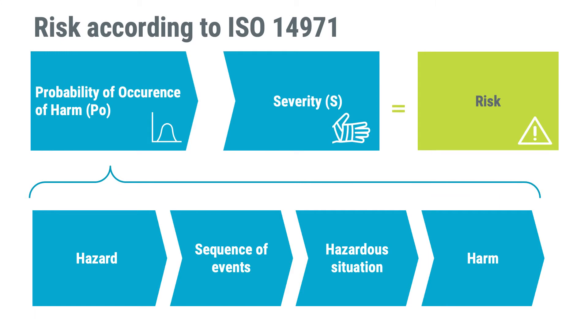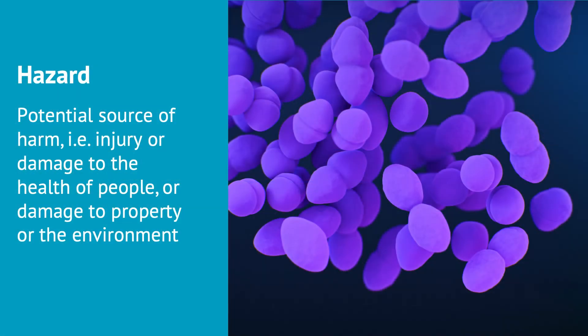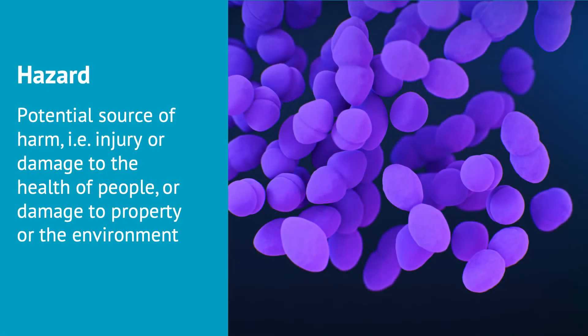Let's start by looking at the meaning of hazard. Hazard is a potential source of harm. In the risk management standard ISO 14971, harm includes injury or damage to the health of people or damage to property or the environment.